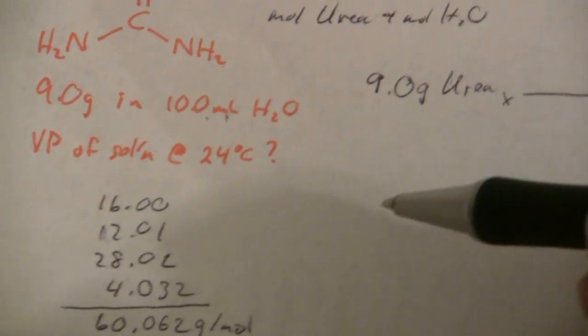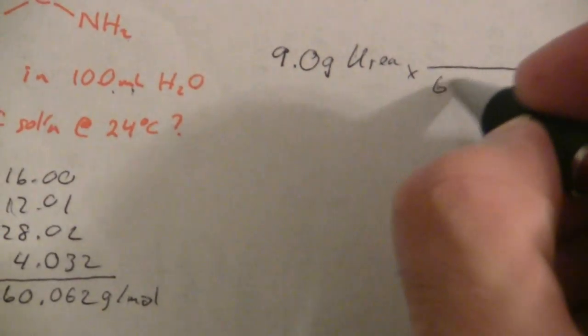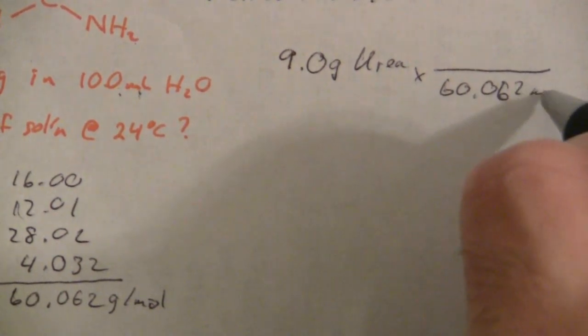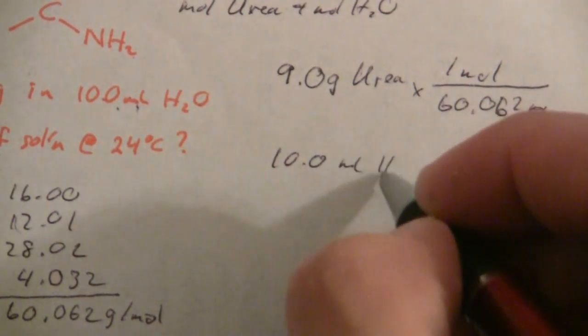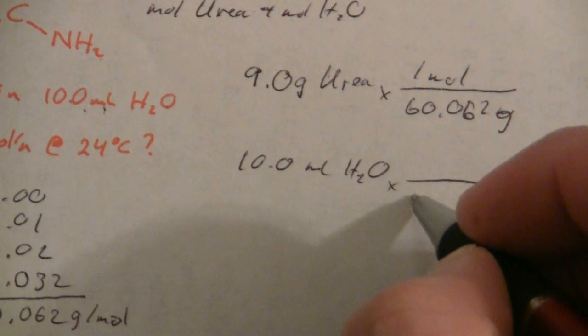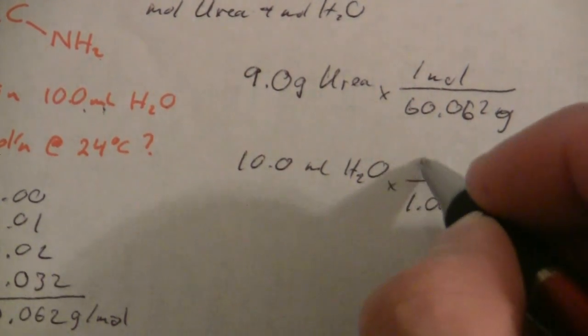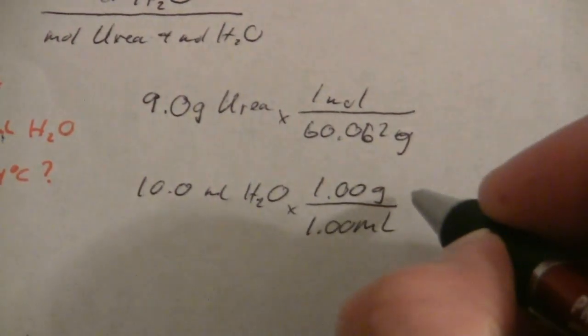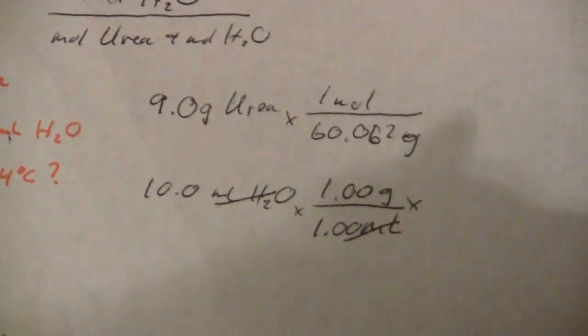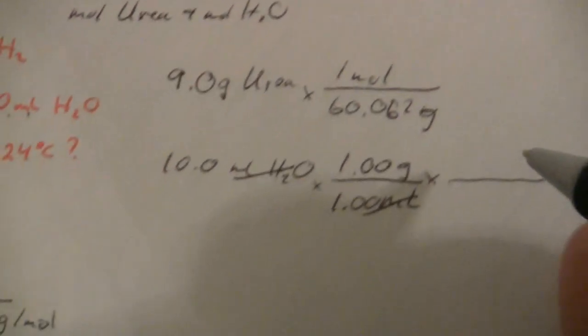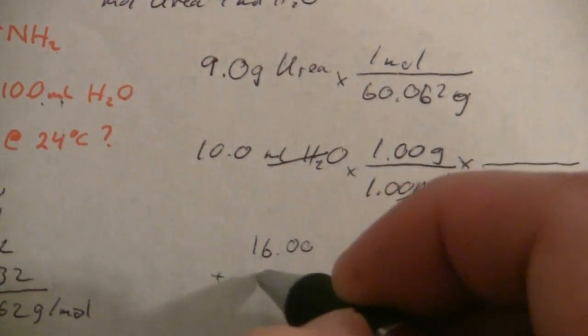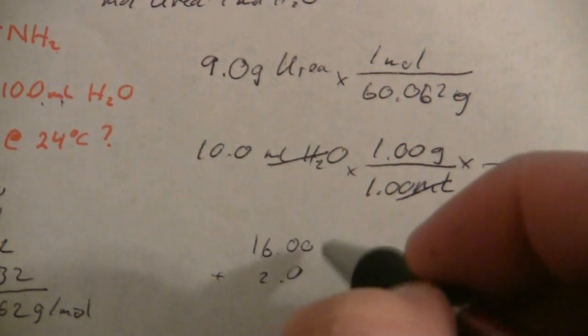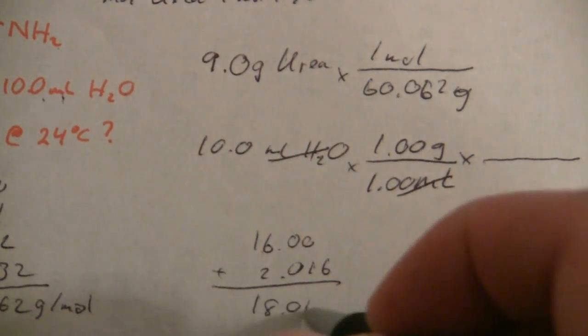So there is the molar mass of the urea—60.062 grams per mole. Now we'll get the moles of urea. We'll do the same thing here: 10.0 milliliters of water, 1.00 grams to one milliliter, and the molar mass for water is 16.00 plus 2.016, which gives us 18.016 grams per mole.